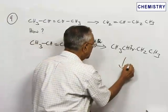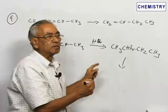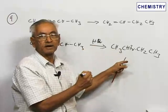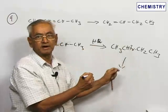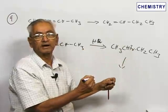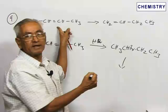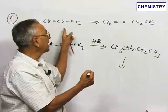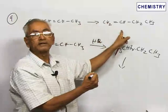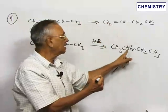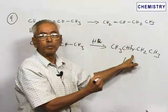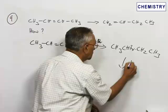This 2-bromobutane, when it undergoes elimination—that means dehydrohalogenation with alcoholic potassium hydroxide—it follows Saytzeff's rule. When it follows Saytzeff's rule, it will give back the same compound, but what we need is not this compound but a terminal olefin.